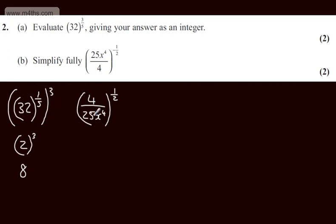The half power is the square root. So the square root of 4 is going to give me 2. The square root of 25 is going to give me 5. And the square root of x to the fourth will be x squared.